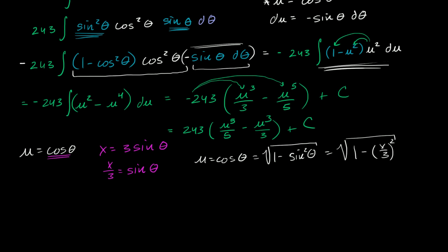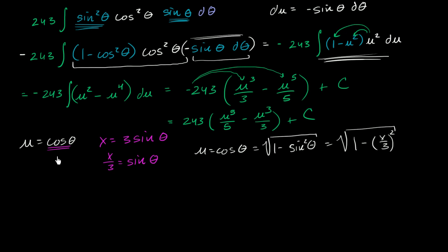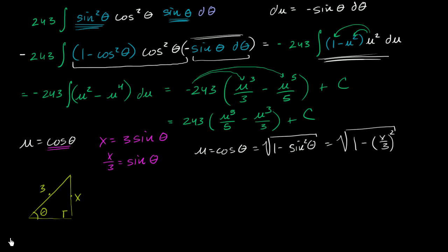There's another technique you might see in a calculus class. We know u equals cosine theta and we want to express u in terms of x, so we draw a right triangle. Since sine of theta equals opposite over hypotenuse equals x over 3, we label the opposite side x and the hypotenuse 3, with angle theta at the base. This satisfies the first substitution.